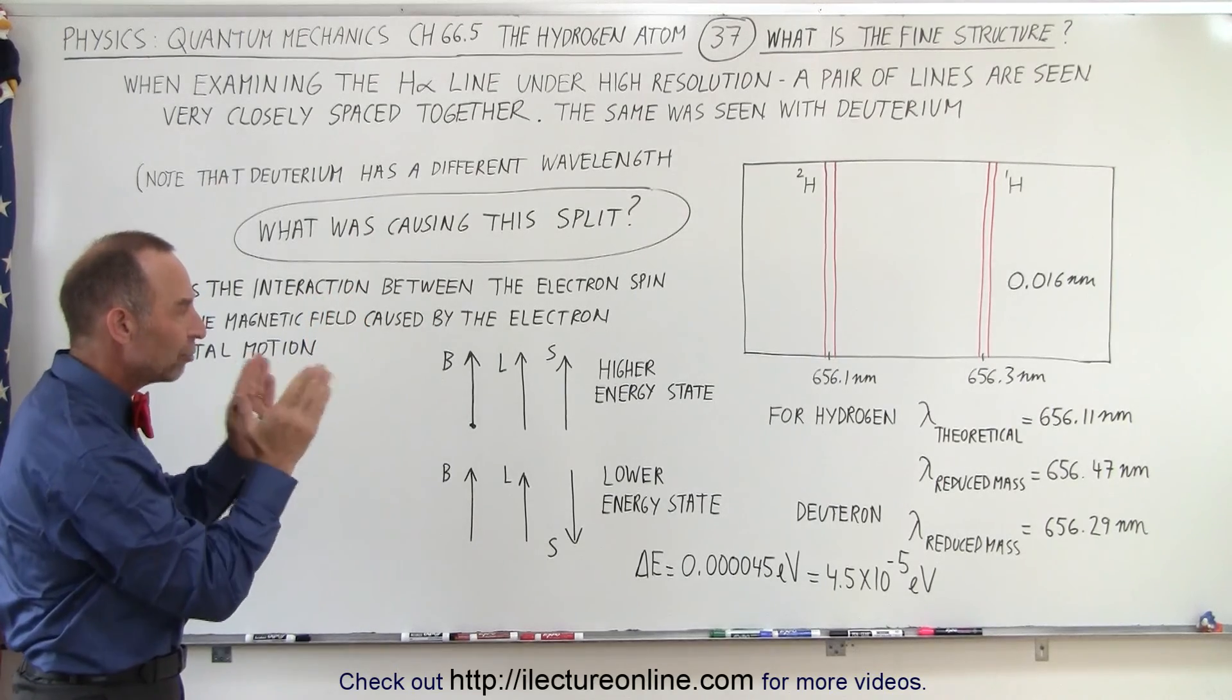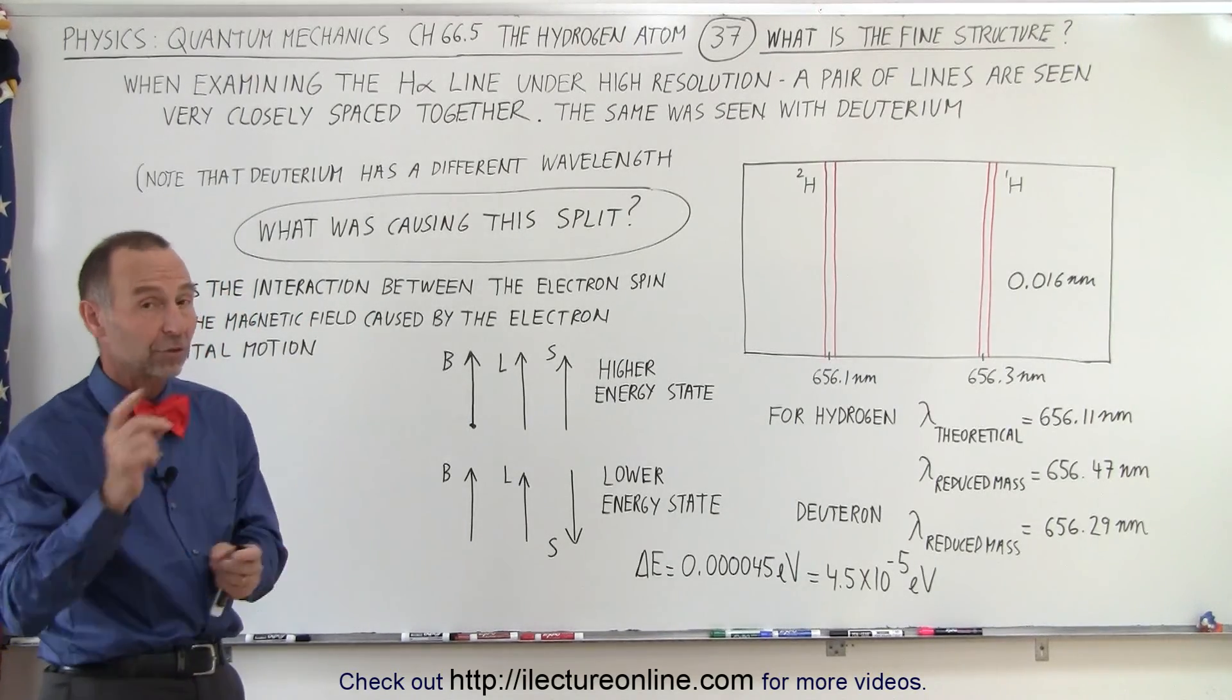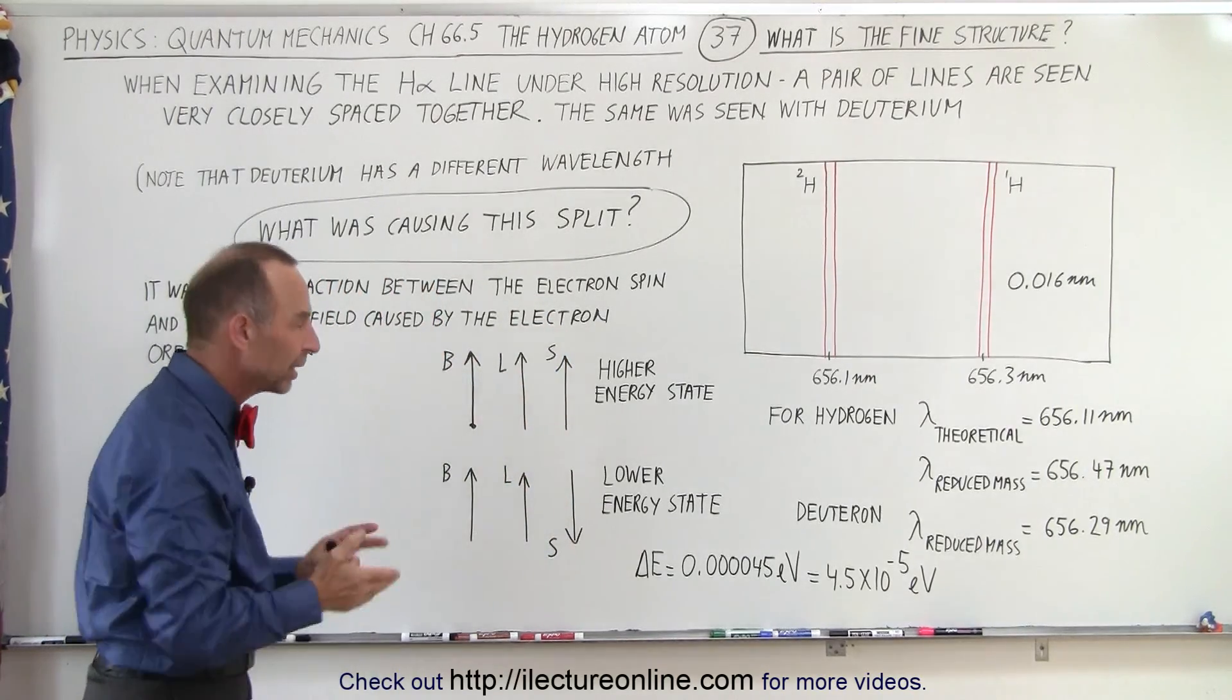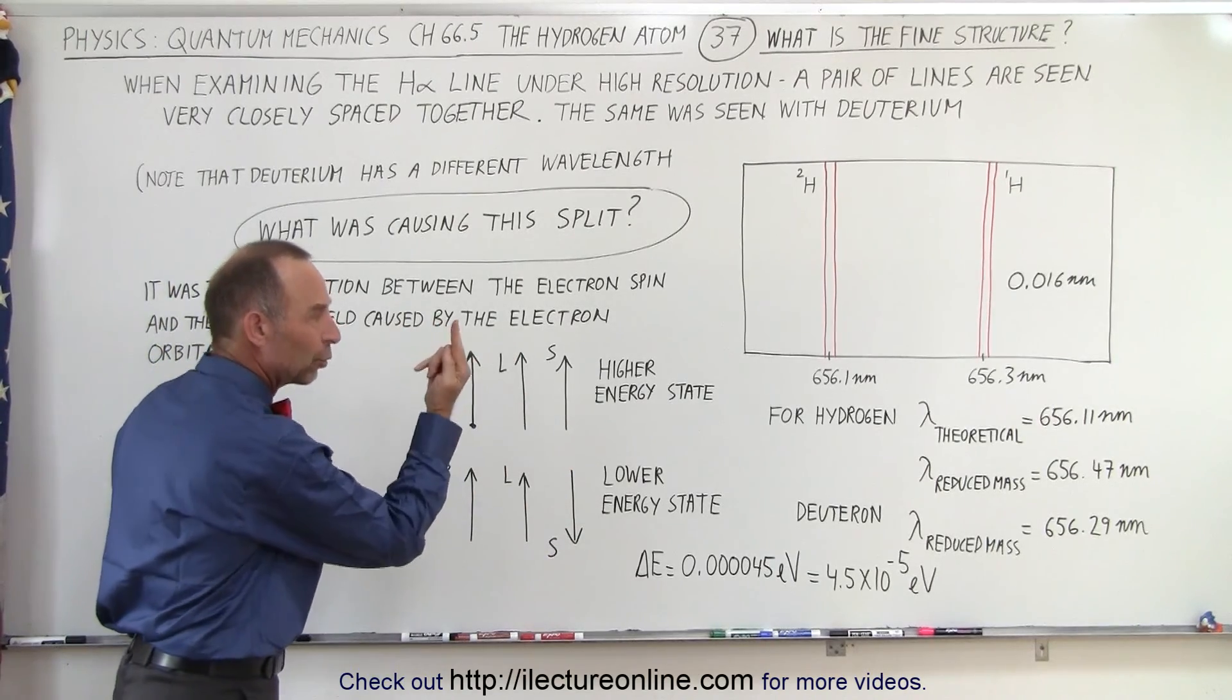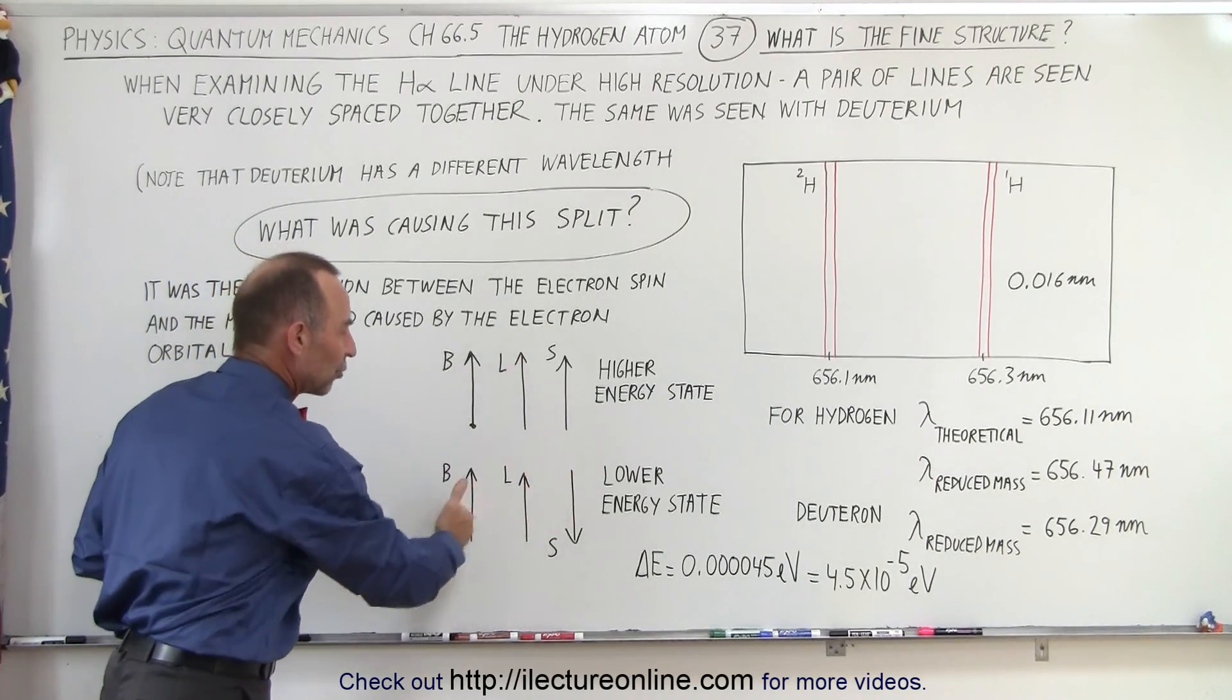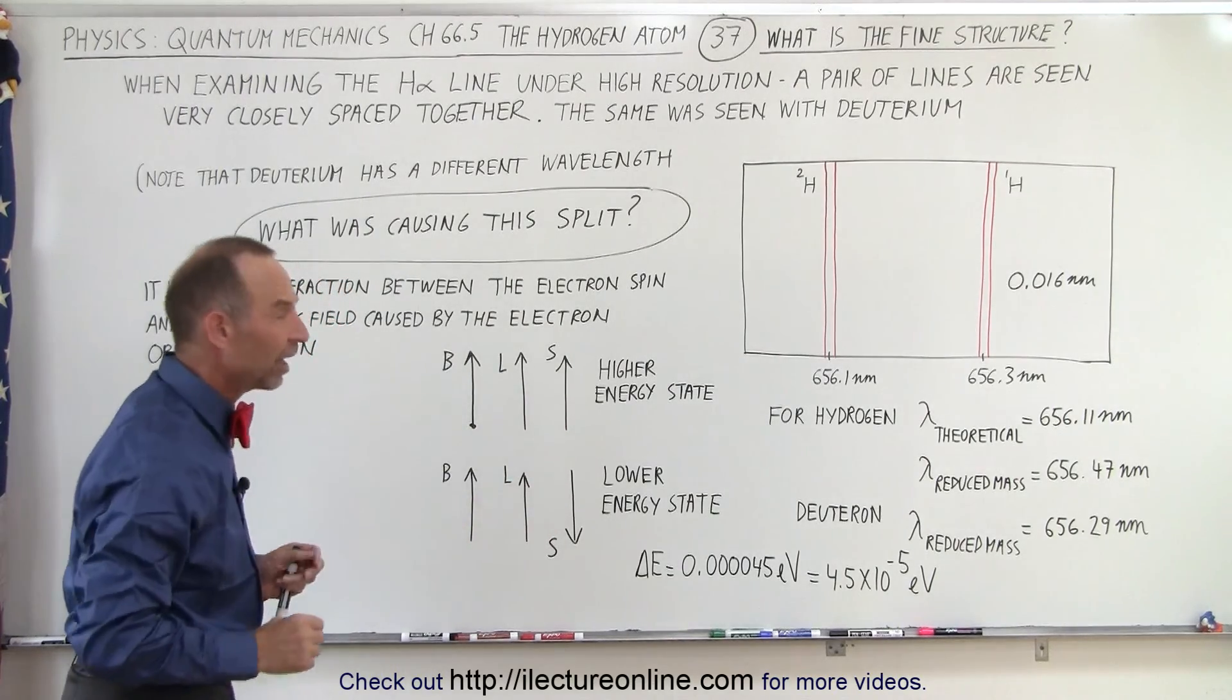So the interaction between the spin direction and the magnetic field is what causes that fine structure, because it turns out that the spin direction can either be spin up or spin down. Now it's not exactly the way we've shown here, but essentially that's what it is. The electron can spin in one direction, or it can flip over and spin in the other direction. Again that's quantum mechanically, and you can see the interaction would be different between the spin direction and magnetic field in this case, and the spin direction and magnetic field in this case.